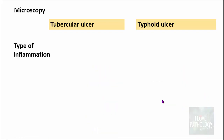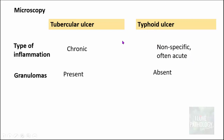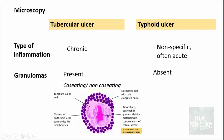Moving on to microscopic features: tuberculosis being a chronic granulomatous disease, the inflammation is chronic, whereas in typhoid ulcers the inflammation is nonspecific and often acute. Granulomas are present in tuberculosis — these are collections of modified macrophages called epithelioid cells, with Langhans giant cells and amorphous eosinophilic granular material which is the caseous material. These granulomas are surrounded by lymphocytes, forming the classical caseating granuloma of tuberculosis. Granulomas are not found in typhoid; sometimes aggregates are referred to as typhoid granulomas, but they are not the classical epithelioid cell granulomas.